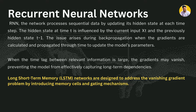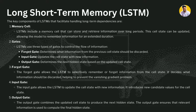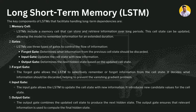LSTM has some key components. It is also a recurrent neural network but with extra components added. The first is the memory cell — LSTM includes a memory cell that can store and retrieve information over long periods. This cell state can be updated, allowing the model to remember information for an extended duration, helping capture long-term dependencies. LSTM also has three types of gates. The first is the forget gate, which allows the LSTM to selectively remember or forget information from the cell state, deciding what should be discarded and what should be retained.